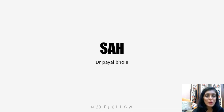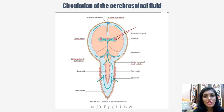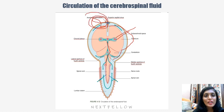Today I will be talking about subarachnoid hemorrhage or SAH. Discussing about the circulation of CSF fluid in brief, it is produced by the choroidal plexus in the lateral ventricles, which goes into the third and fourth ventricles. Then it goes into the subarachnoid space and is absorbed in the arachnoid granulation tissue, draining into the sagittal sinus.